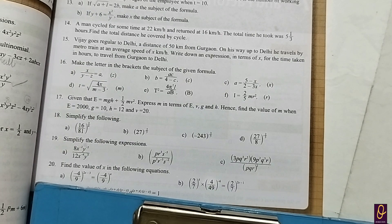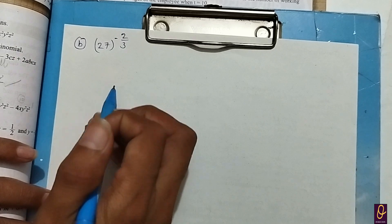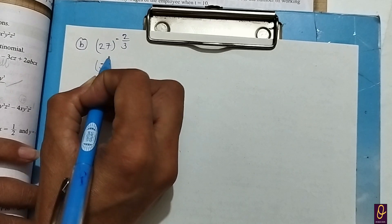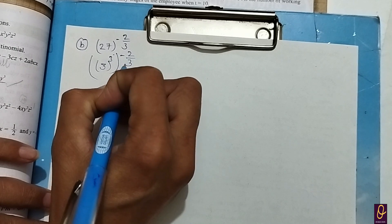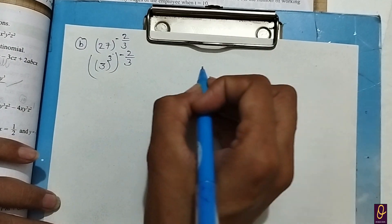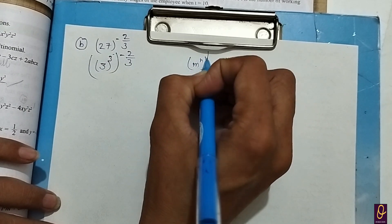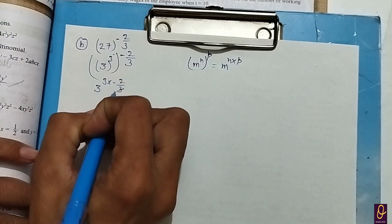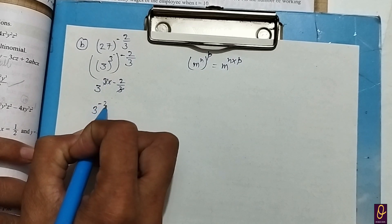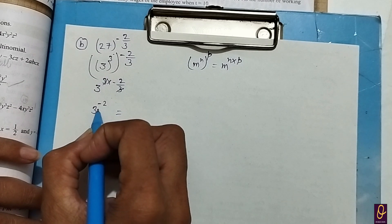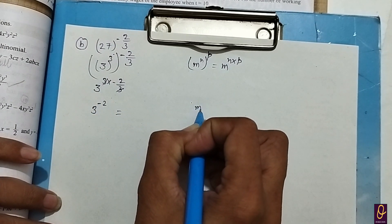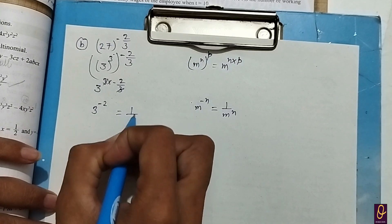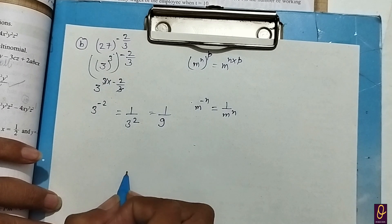Now B part. We have 27 raised to power minus 2 by 3. We write 27 as 3 raised to power 3. Using the rule m raised to power n raised to power p equals m raised to power n into p, we get 3 raised to power 3 into minus 2 by 3, so 3 and 3 cancel, giving 3 raised to power minus 2. Then using m raised to power minus n equals 1 by m raised to power n, we get 1 by 3 squared, which equals 1 by 9. This is our answer.